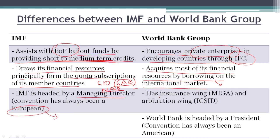The World Bank Group also has an insurance wing, which is MIGA — the Multilateral Investment Guarantee Agency — and an arbitration wing, which is ICSID — the International Centre for Settlement of Investor Disputes. IMF does not have any institutions of this kind; it is only IMF.